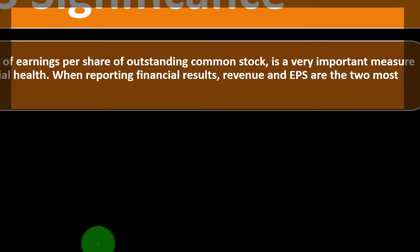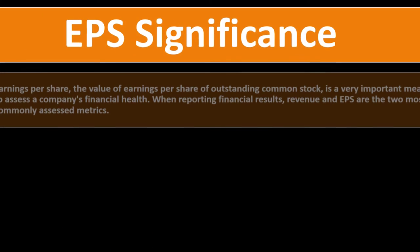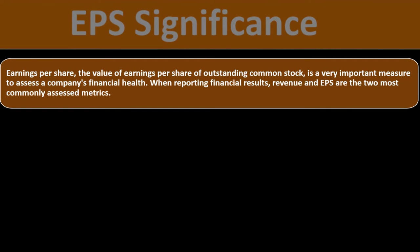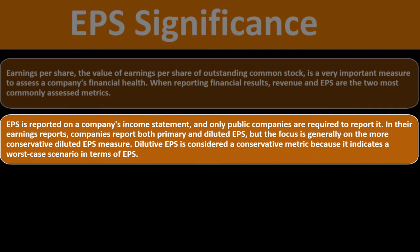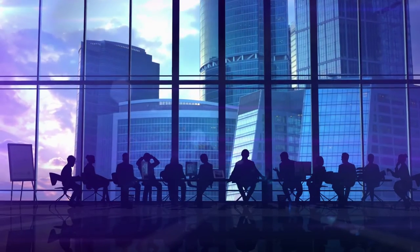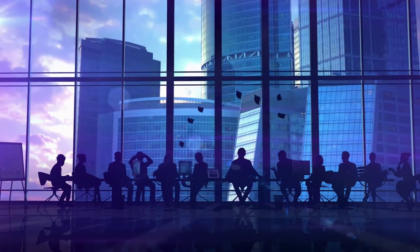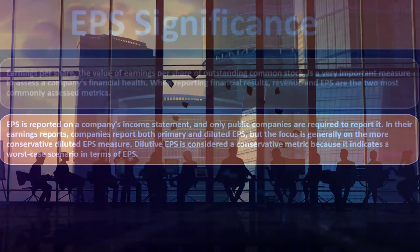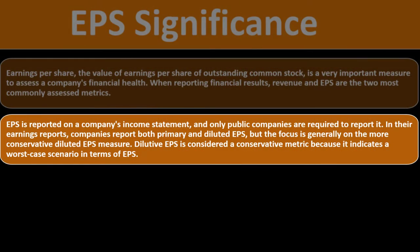Earnings per share significance: the value of earnings per share of outstanding common stock is a very important measure to assess a company's financial health. When reporting financial results, revenue and earnings per share are the two most commonly assessed metrics. Earnings per share is reported on a company's income statement, and only public companies are required to report it. Companies report both primary and diluted EPS in their earnings reports.